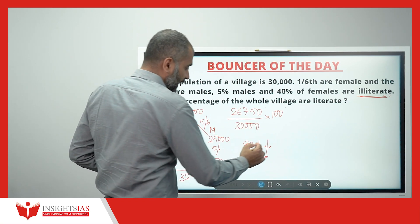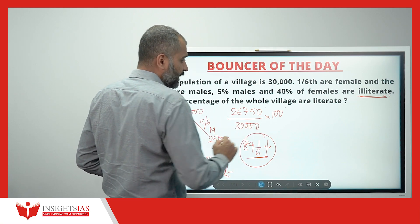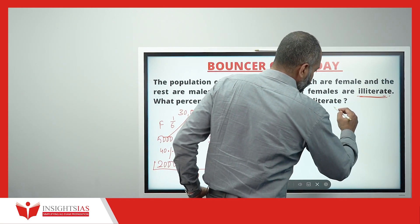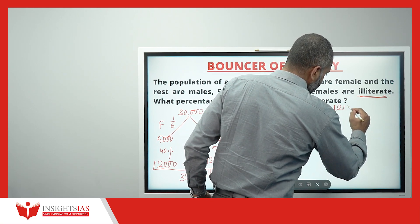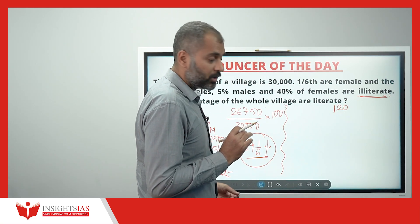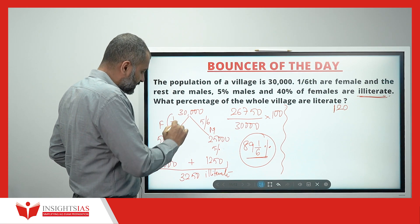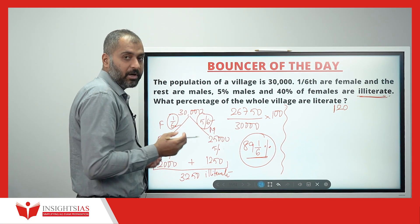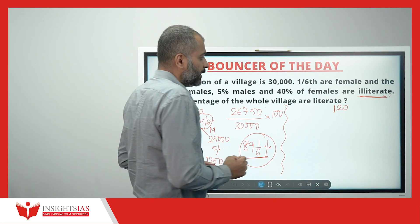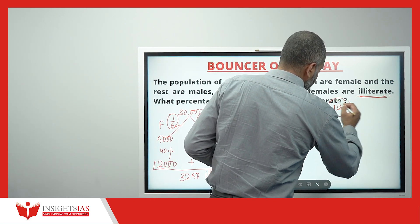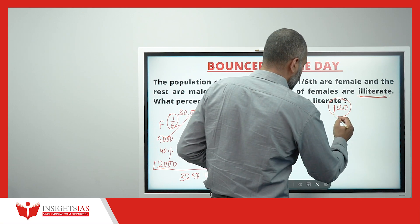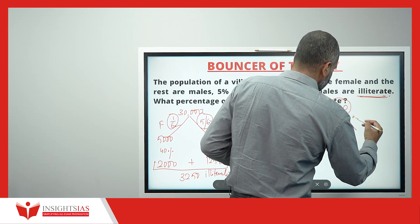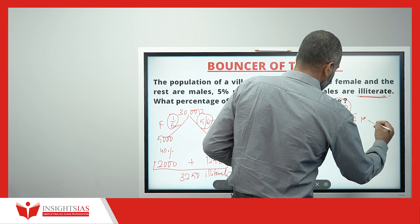Rather than doing all these calculations, we can do this directly. Assume the population as 120, because we need to divide by 1/6 as well as 5/6. Any multiple of 6 — like 60, 120, or 180 — will give an easy answer. With 120 as total population, 1/6 are female and 5/6 are male.